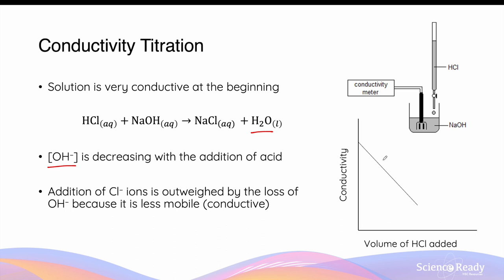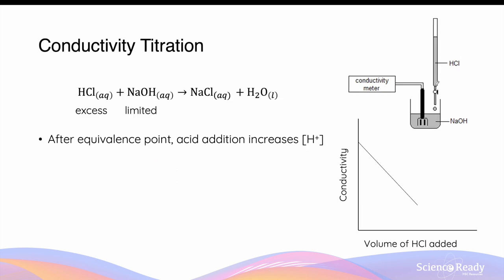On the graph, as titration is carried out, the conductivity of the solution decreases. Even though adding hydrochloric acid also adds chloride ions to the solution, this gain is outweighed by the loss of hydroxide ions — recall that hydroxide ions are more conductive than chloride ions. So even though we get more chloride ions, the overall conductivity still decreases due to the loss of hydroxide ions, reaching a minimum value at the equivalence point where we have the lowest concentration of ions — sodium ions and chloride ions.